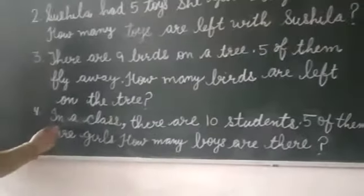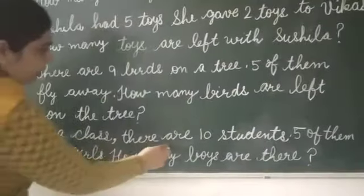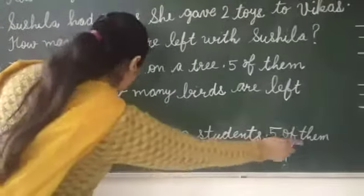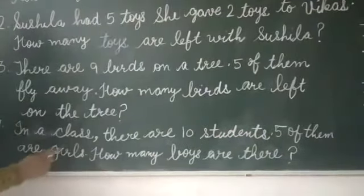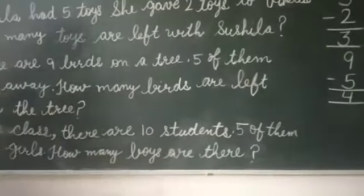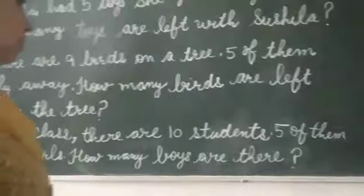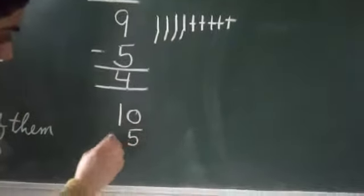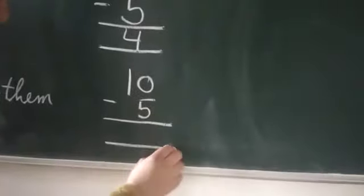Now next. In a class, there are ten students. Class mein kitne students hai? Ten. Five of them are boys. Unme se jo paanch hai, wo boys hai. How many girls are there? To yaha pe girls kitne hai class mein? So here we write 10. Yaha pe hum five write karenge. Aur inko subtract karenge.